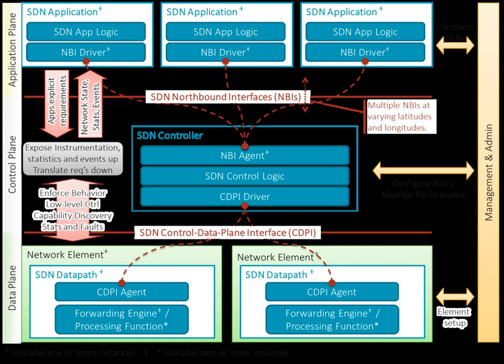SDN architectures decouple network control and forwarding functions, enabling network control to become directly programmable and the underlying infrastructure to be abstracted from applications and network services. The OpenFlow protocol can be used in SDN technologies. The SDN architecture is directly programmable because network control is decoupled from forwarding functions.